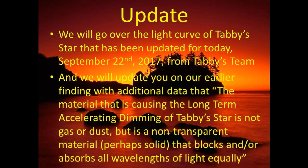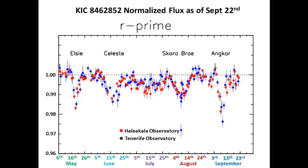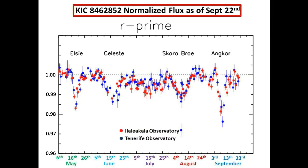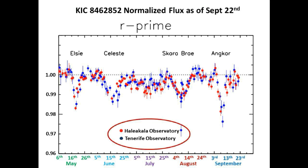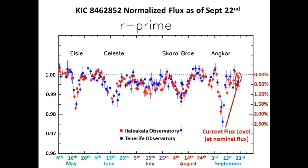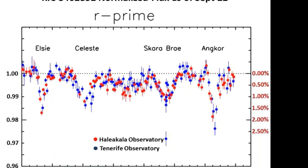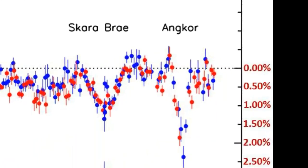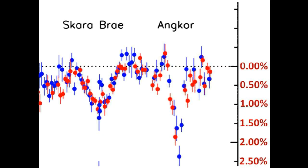Here is an updated normalized light curve of Tabby's Star taken in the aura band from two different observatories, and we are currently resting at approximately nominal flux for the time being. Nothing really seems to be happening at the moment. Some of our folks have asked why Tabby's Star appears slightly bright just before a short-term dimming event — we will answer this in an upcoming video. It's a really neat explanation that a lot of folks don't think of.